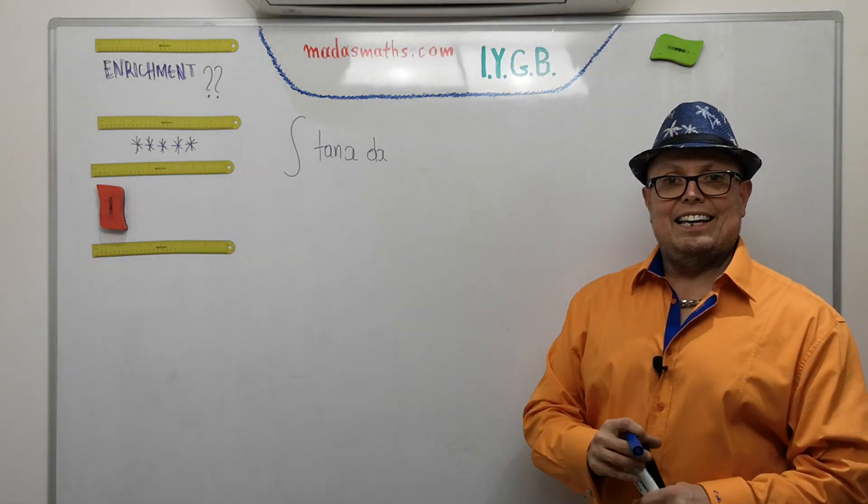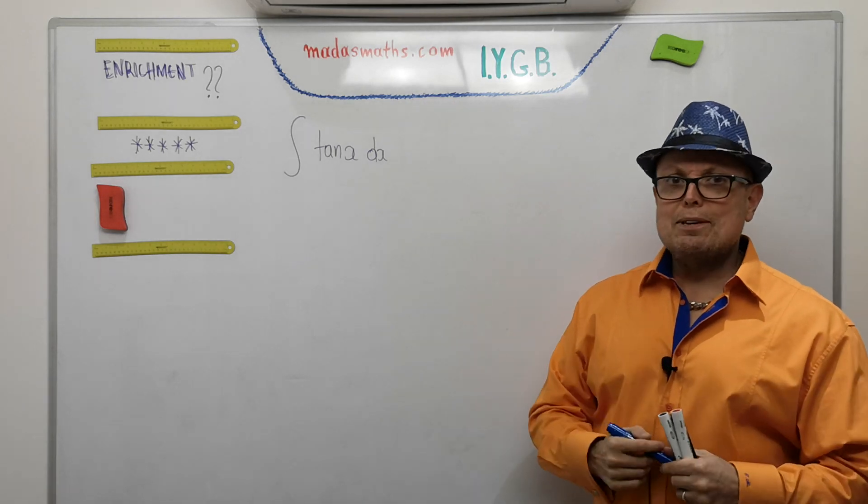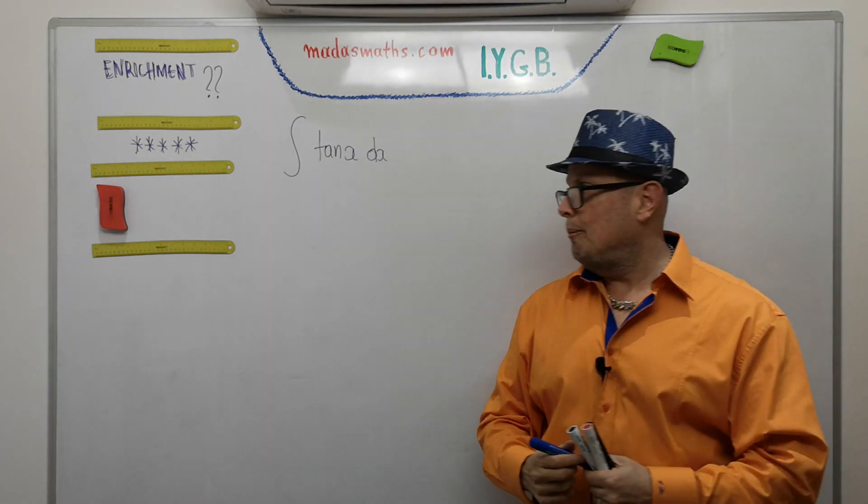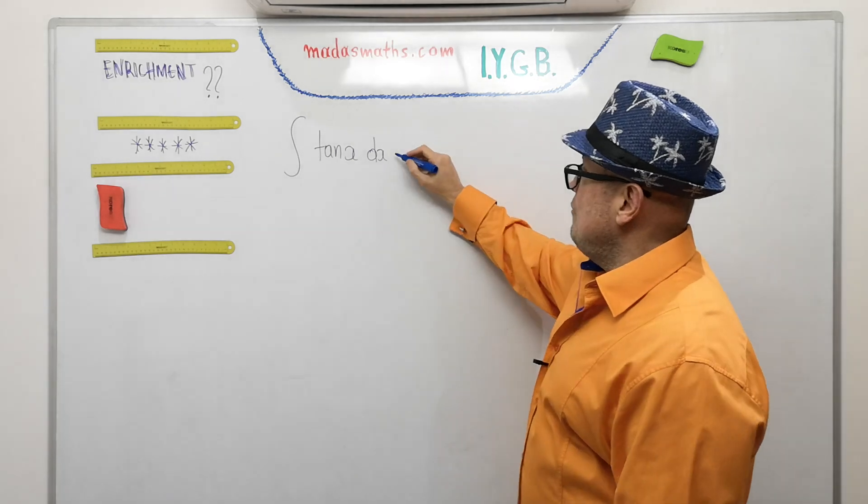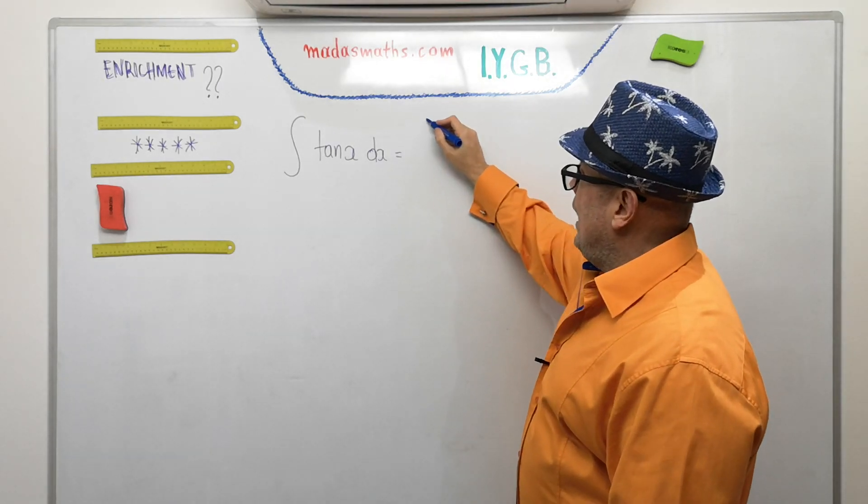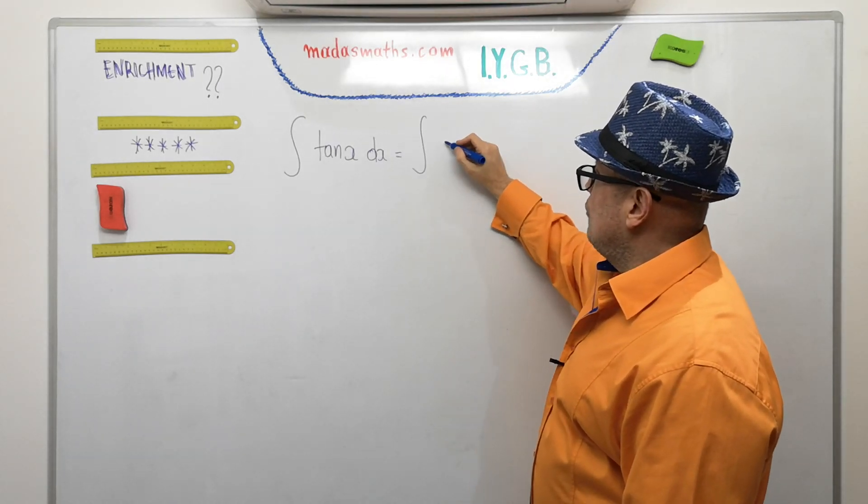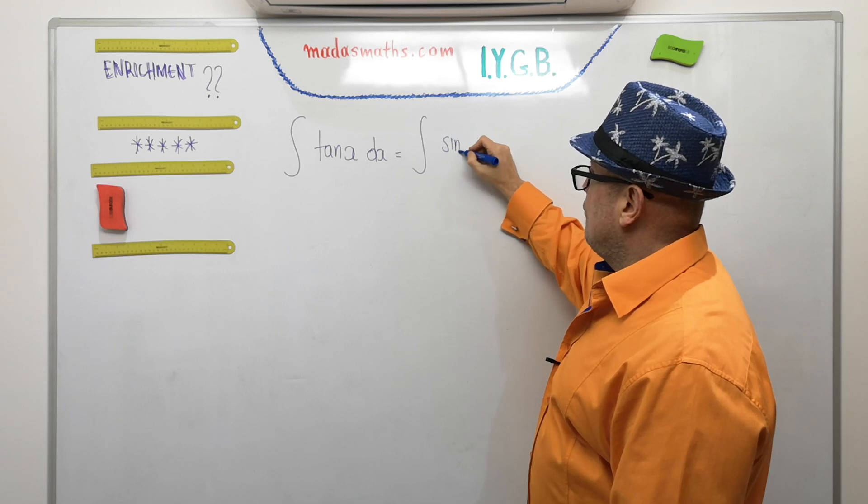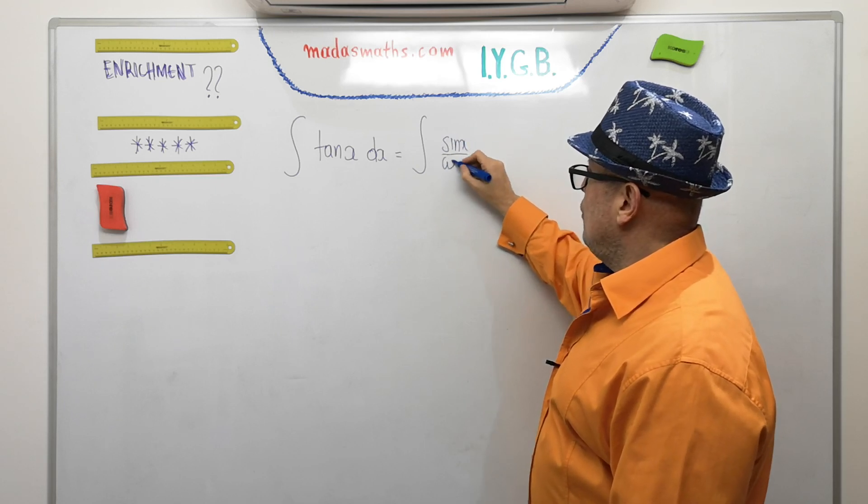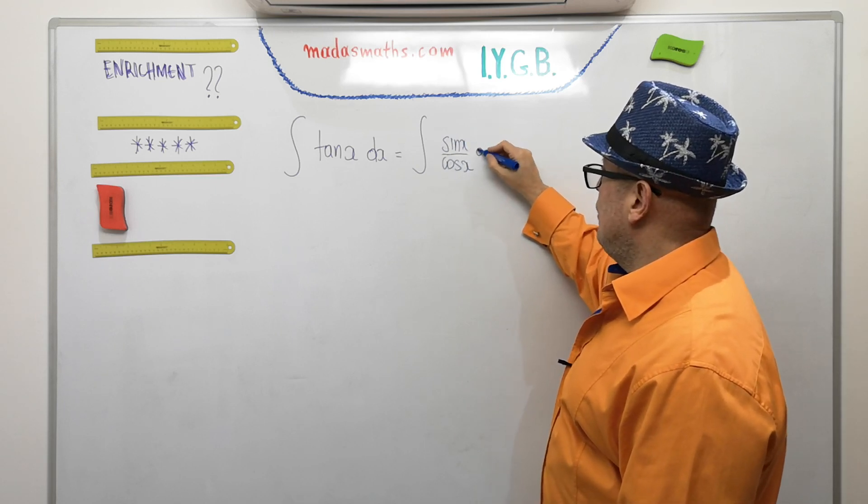This is the tan of x integral, which I'm gonna do very bizarrely by parts. See if you can follow my logic. I'm going to write this as the sine of x over the cos of x. Nothing funny so far.